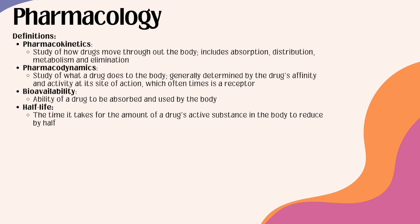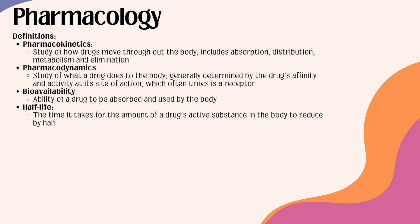First, I want to go over a couple of definitions. Pharmacokinetics is the study of how drugs move throughout the body — what the body does to the medication. A drug's pharmacokinetics includes absorption, distribution, metabolism, and elimination. Pharmacodynamics is the study of what a drug does to the body — it refers to the body's therapeutic response to a medication, generally determined by the drug's affinity and activity at its site of action, which is often a receptor. Bioavailability is the ability of a drug to be absorbed and used by the body. And a drug's half-life refers to the time it takes for the amount of a drug's active substance in the body to reduce by half.